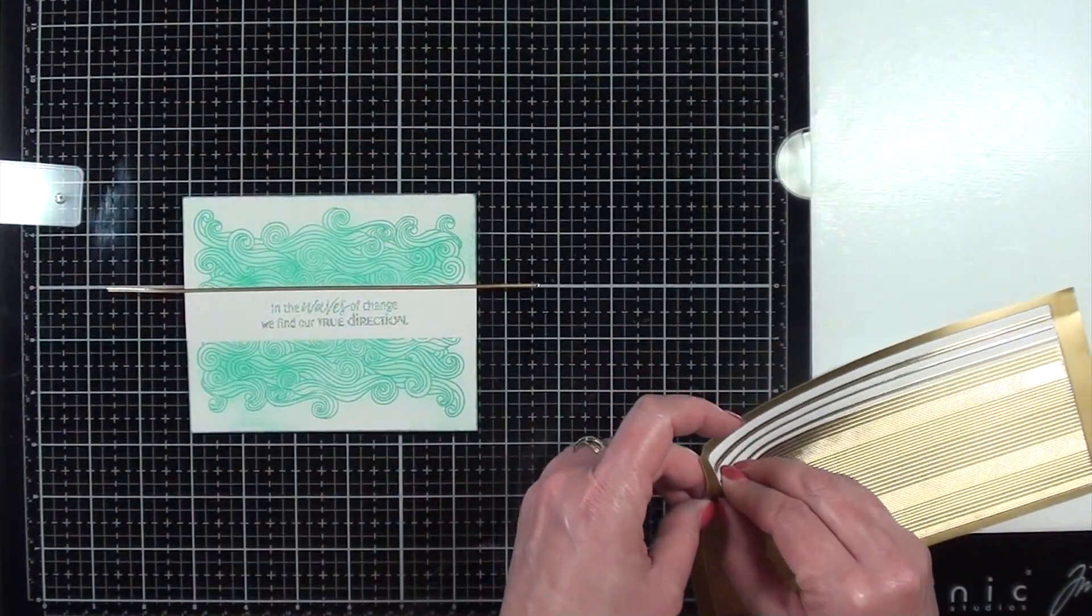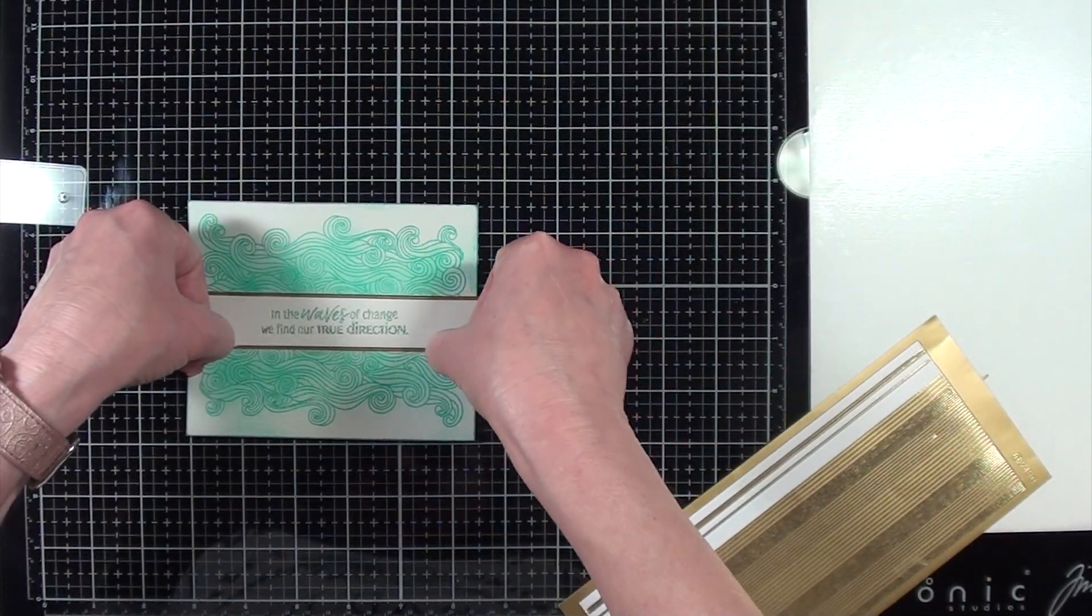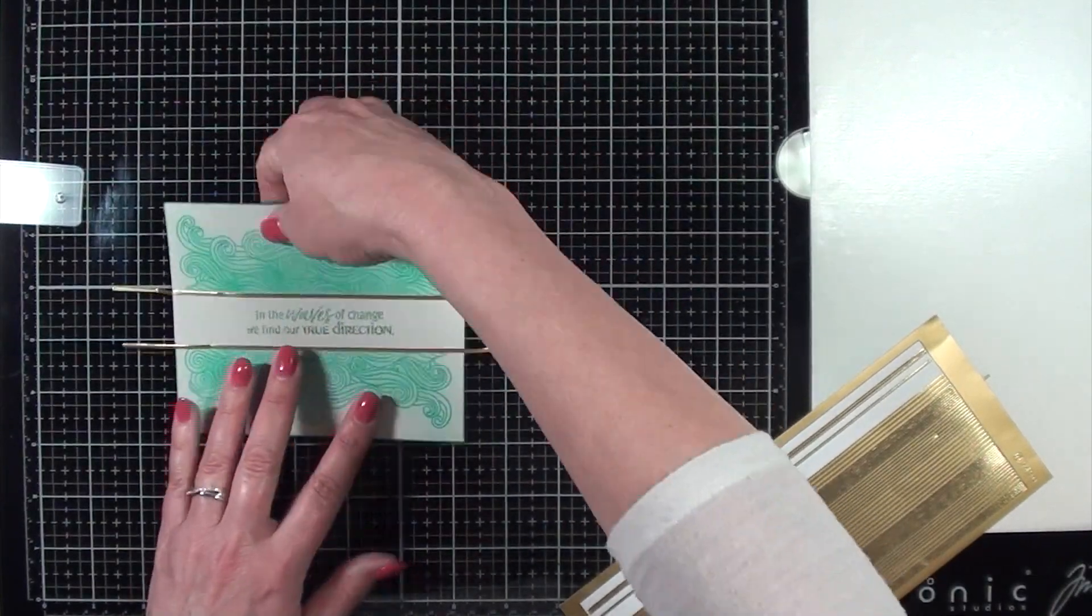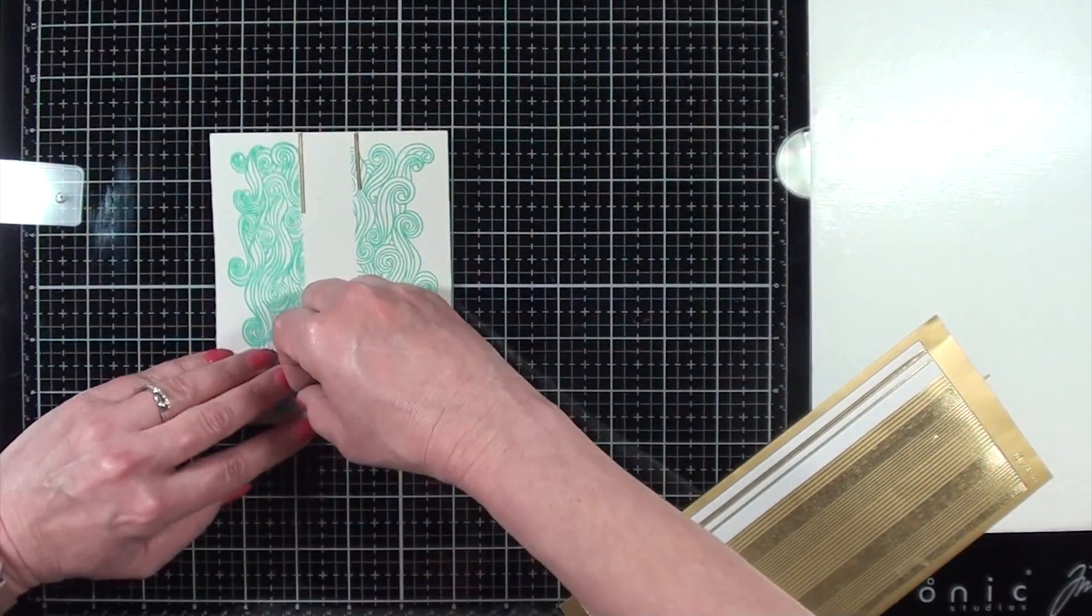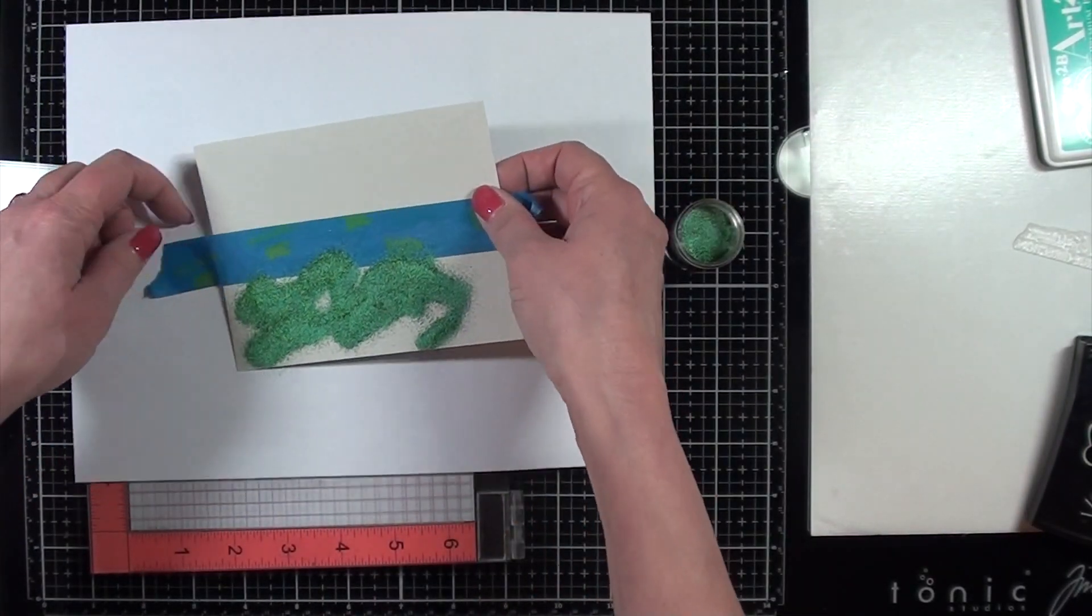And I'm finishing off the panel by adding some gold stickers. And I'm using gold because there is gold in that embossing powder. So I just get those lined up and these are a lot like washi tape. You have a little bit of time to work with them before they pretty much stay adhered permanently.